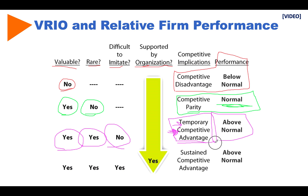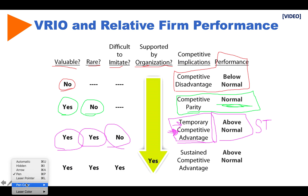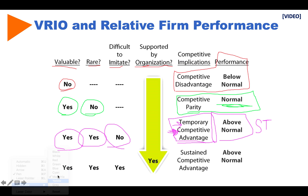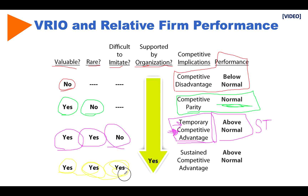With a temporary competitive advantage, we are beating competition in the short term but it's not sustainable or long-term, so we have above-normal performance only in the short term. Where we want to be as an organization is having all four criteria checked yes — valuable, rare, difficult to imitate — and if it is supported by the organization, we get a sustained competitive advantage that is above normal in the longer term.